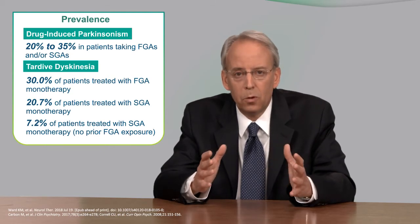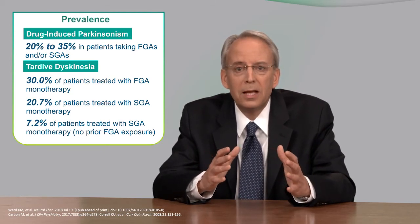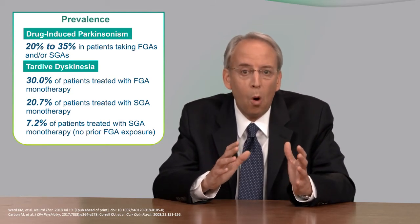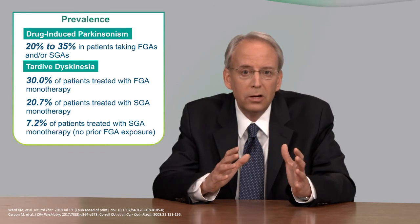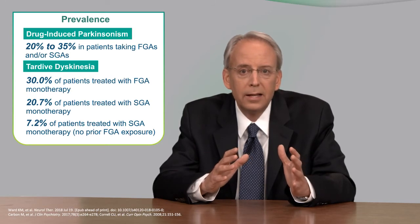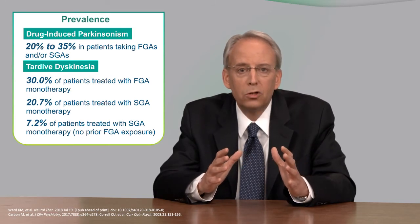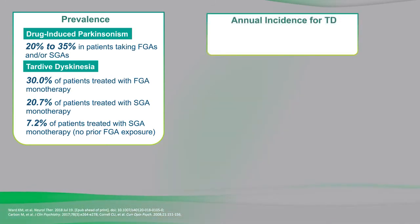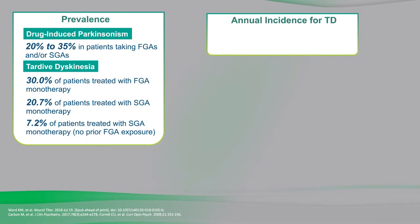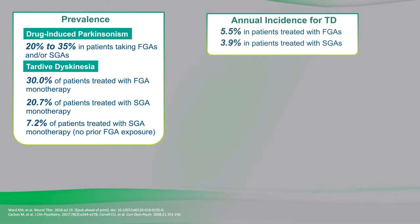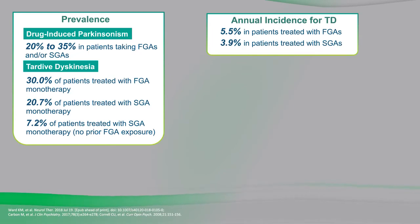Furthermore, the prevalence of TD in patients exposed only to second-generation antipsychotics is 7.2 percent. However, the annual incidence of TD in the U.S. is 5.5 percent for first-generation antipsychotics and nearly 4 percent for second-generation antipsychotics.